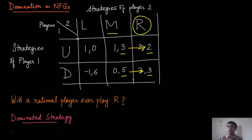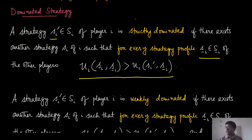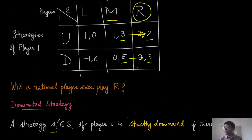This is exactly the idea behind domination. We say that strategy M dominates strategy R for Player 2. Formally, we call a strategy S'_i of player i strictly dominated if there exists another strategy S_i such that for every strategy profile of the other players, S_{-i}, the utility of agent i when playing S_i is strictly greater than when playing S'_i, while the other players retain the same strategies. Relating to our example: M is S_i and R is S'_i, and utilities are strictly larger in both cases.